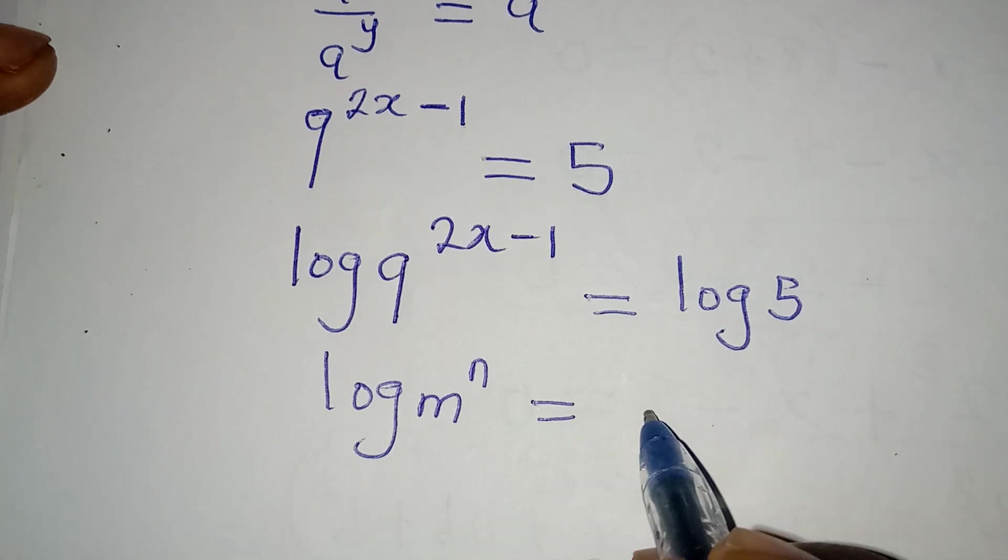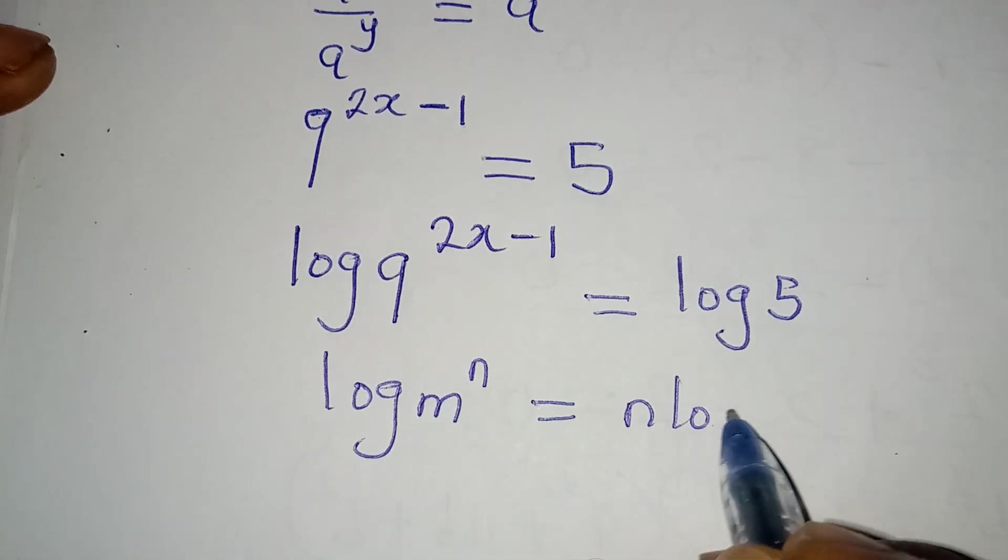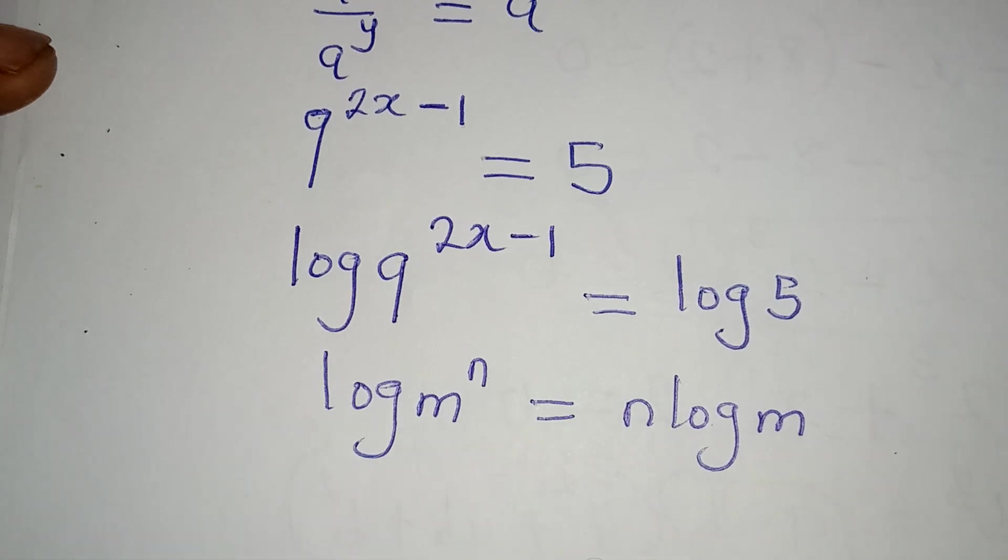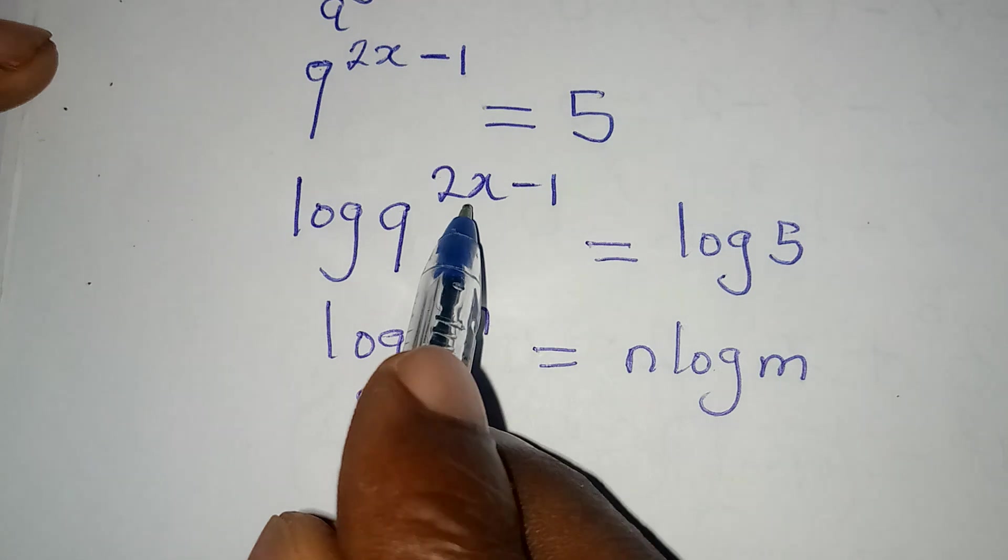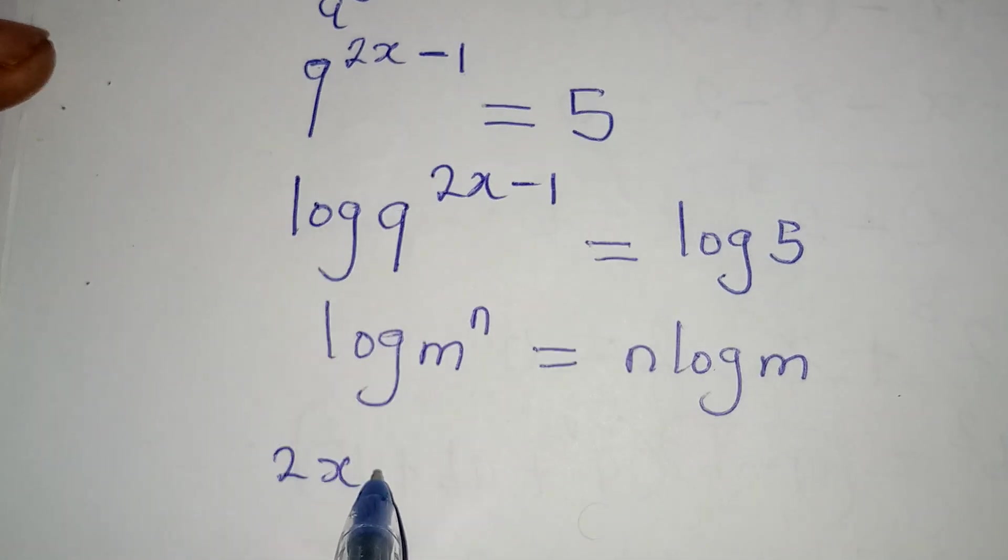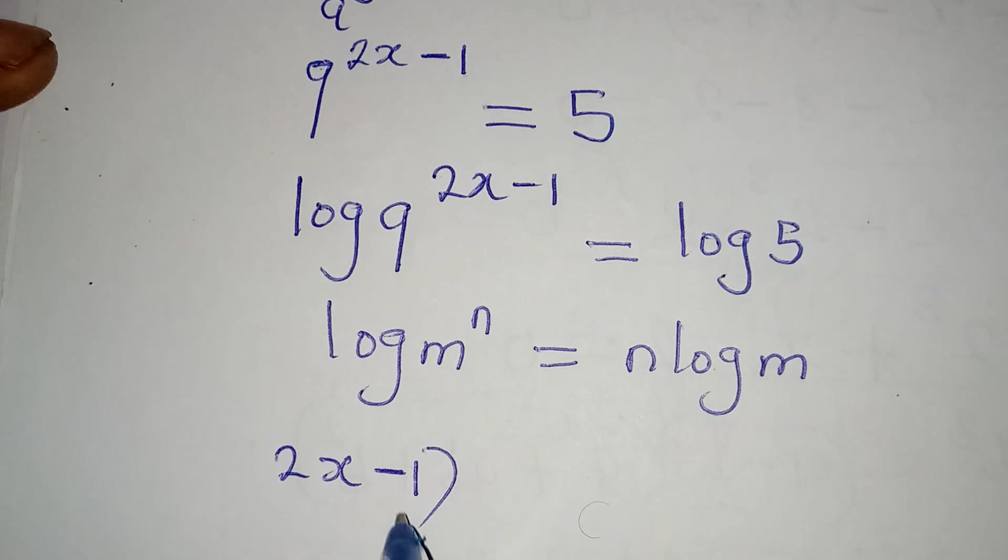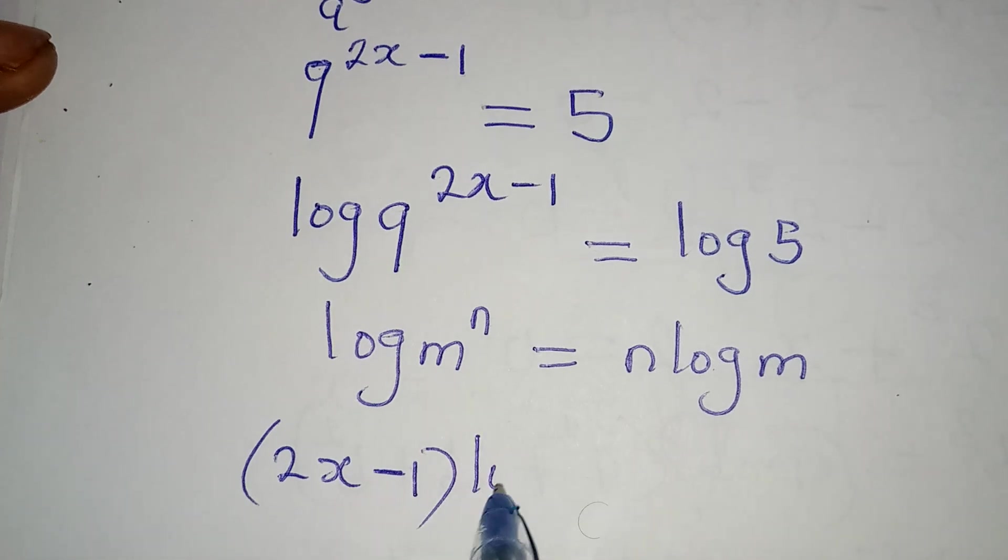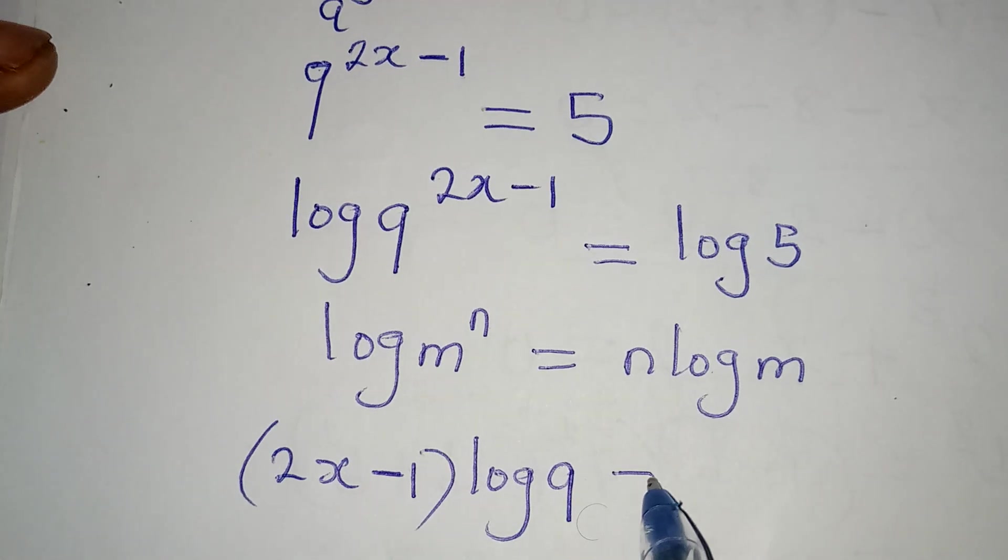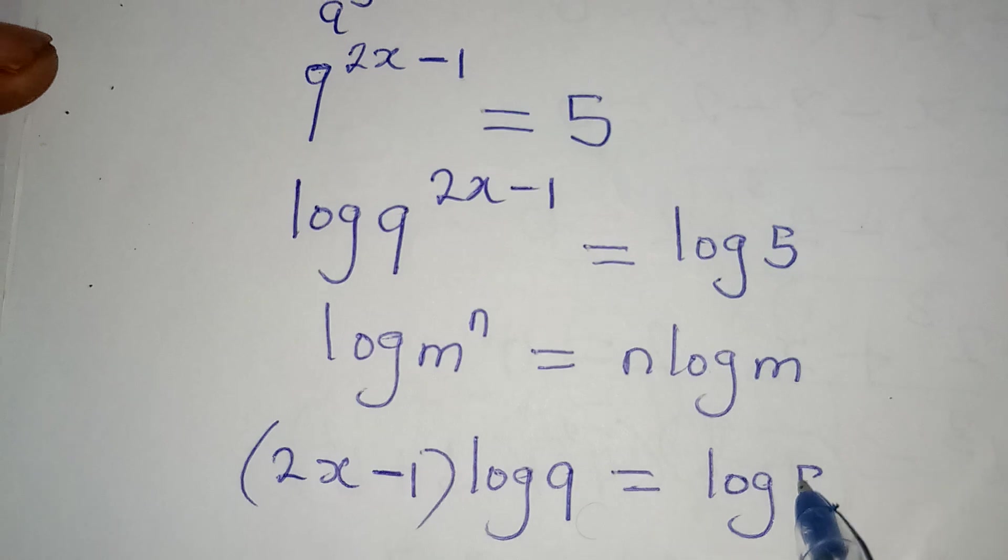It is the same thing as n log m, so the powers can always go behind. And because of that, I'm going to have 2x minus 1 in brackets, then we have log 9. This will be equal to log 5.